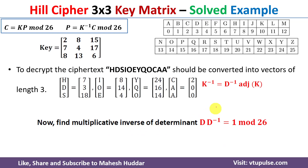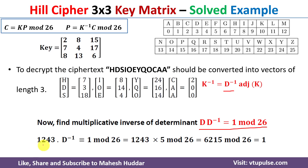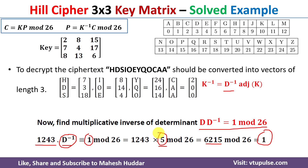Since we need the multiplicative inverse of the determinant (d⁻¹), we use the condition d × d⁻¹ ≡ 1 (mod 26). With d = 1243, we use trial and error: we try d⁻¹ = 1, 2, 3, … until the product mod 26 equals 1. When d⁻¹ = 5, we get 1243 × 5 = 6215, and 6215 mod 26 = 1. Therefore d⁻¹ = 5.